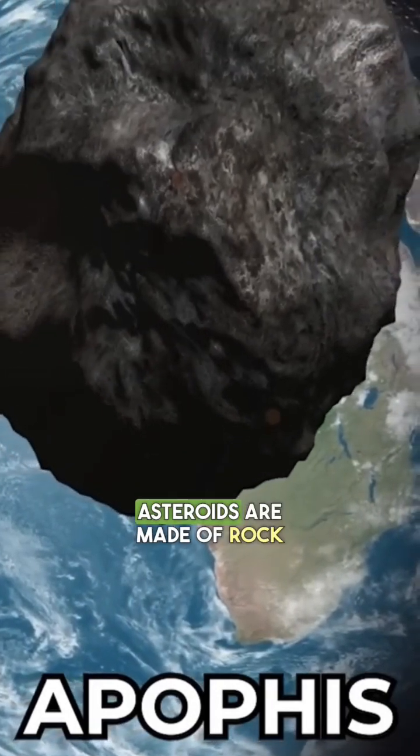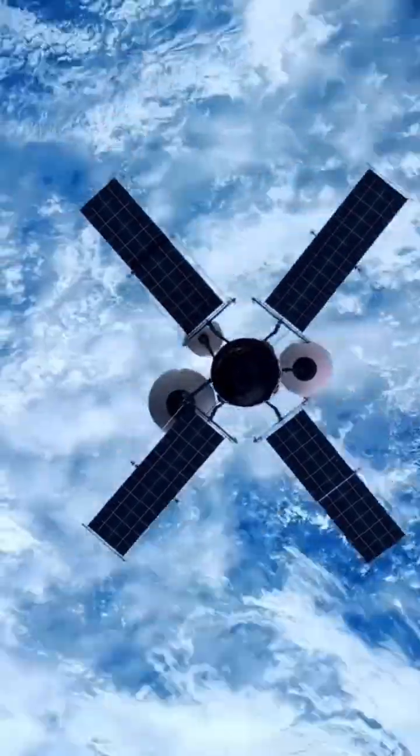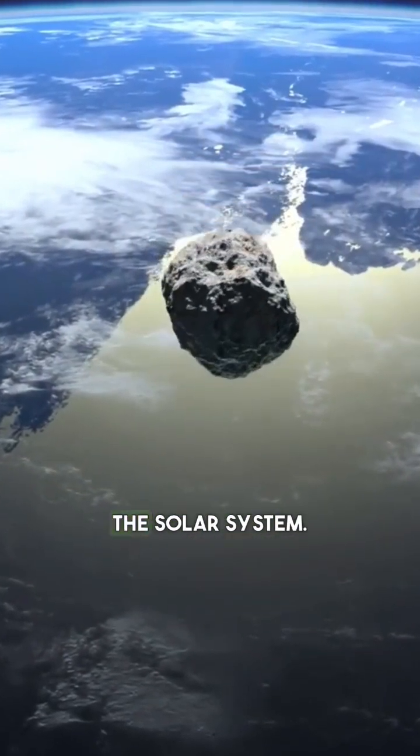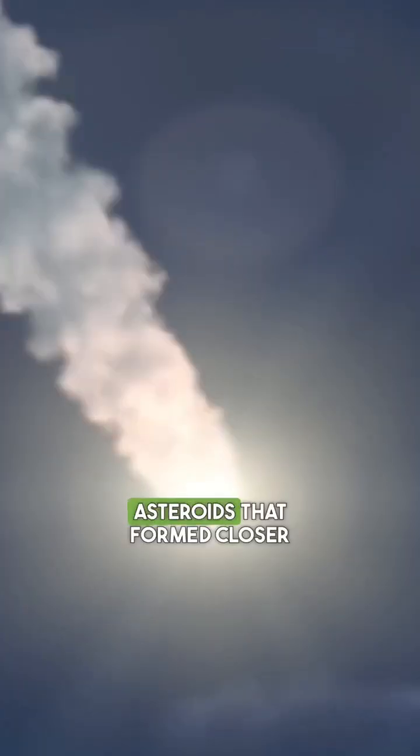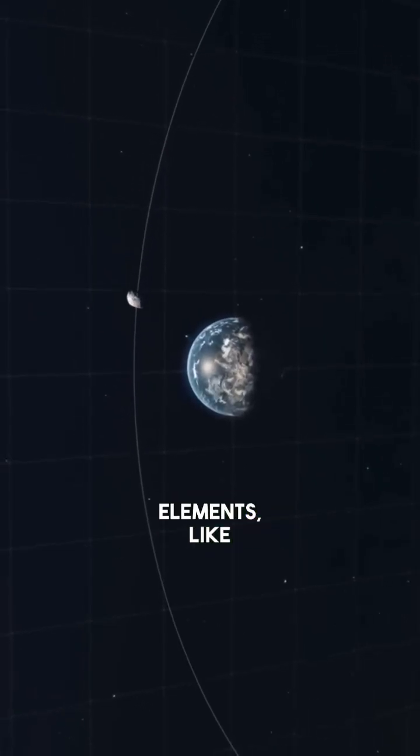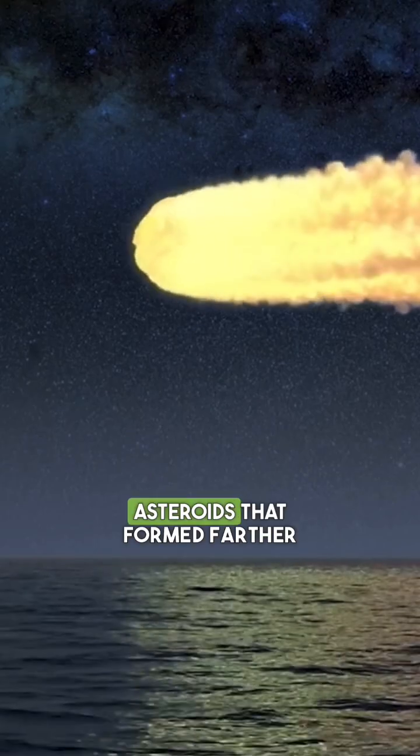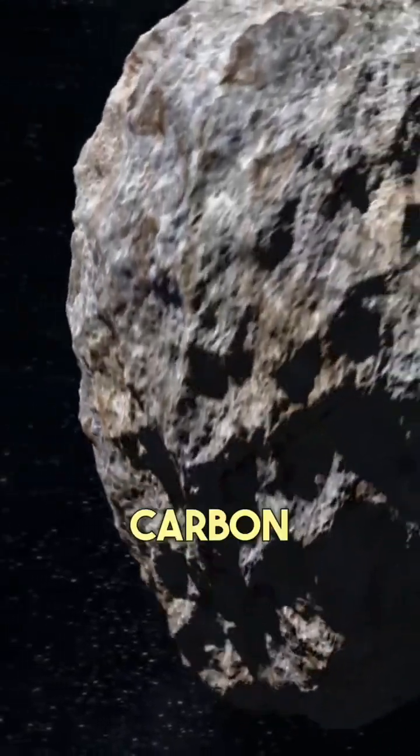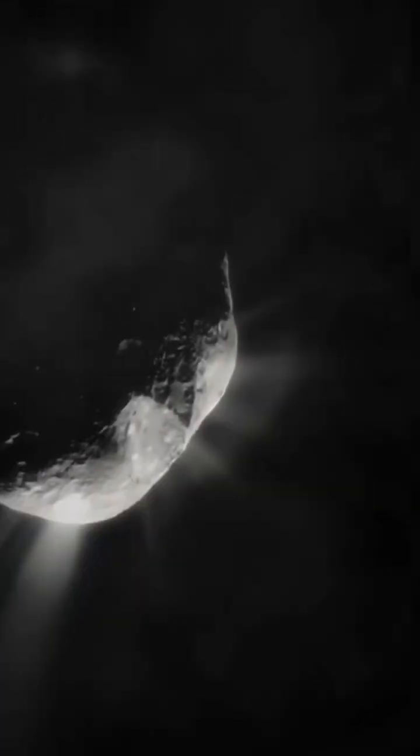Fact 1. Asteroids are made of rock and metal. The composition of an asteroid depends on where it formed in the solar system. Asteroids that formed closer to the sun are made of heavier elements, like iron and nickel. Asteroids that formed farther from the sun are made of lighter elements, like carbon and silicon.